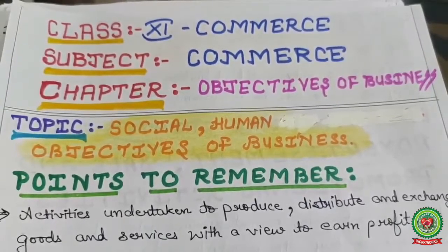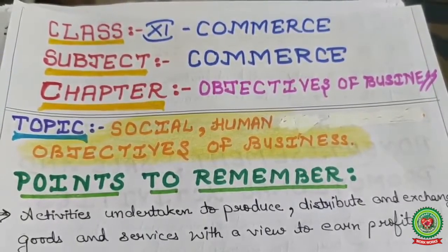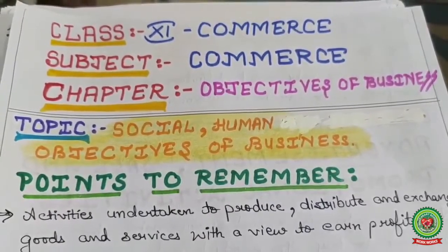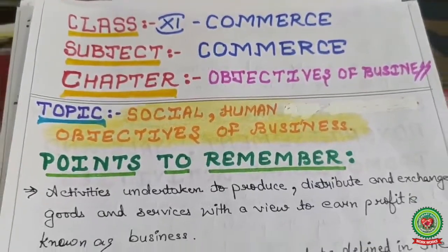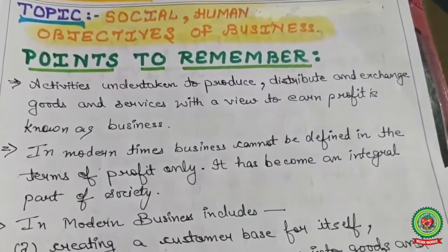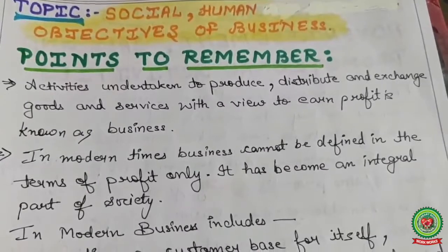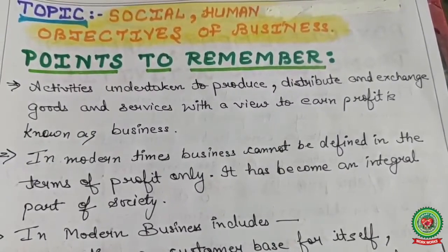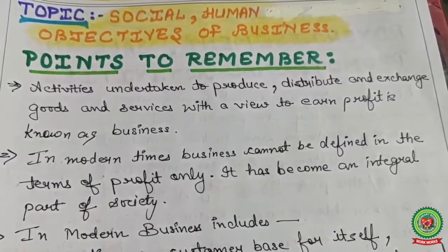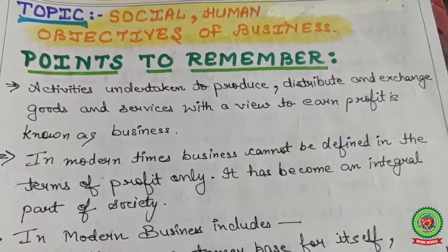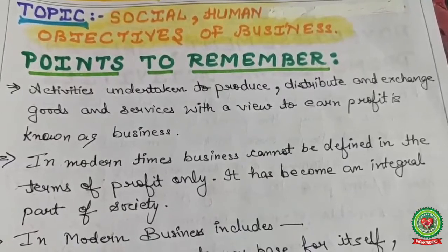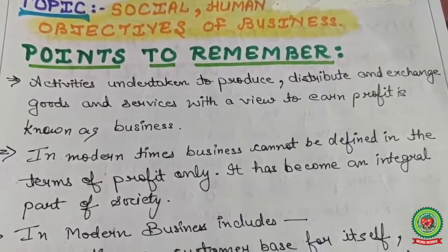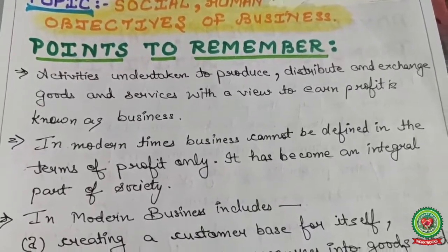My today's topic is all about the objectives of business. Yesterday I discussed economic objectives; today I'm going to discuss social and human objectives. Here are some points to remember. First: activities undertaken to produce, distribute, and exchange goods and services with a view to earn profit is known as business. Simply, business involves three activities — production, distribution, and exchange of goods and services.